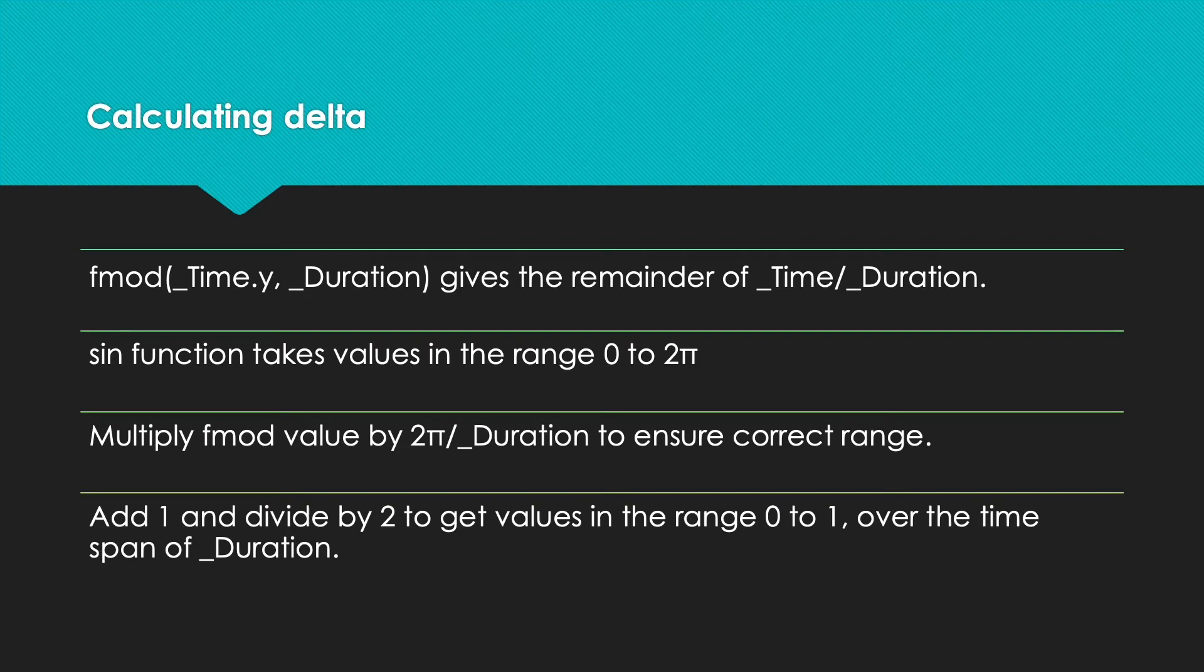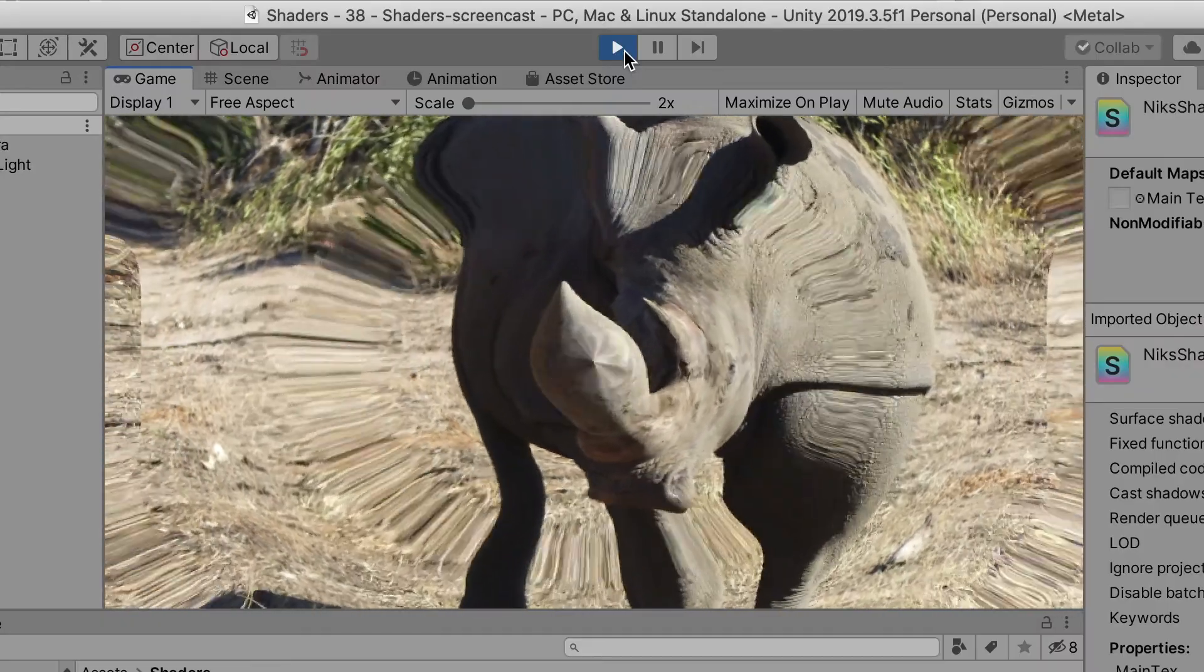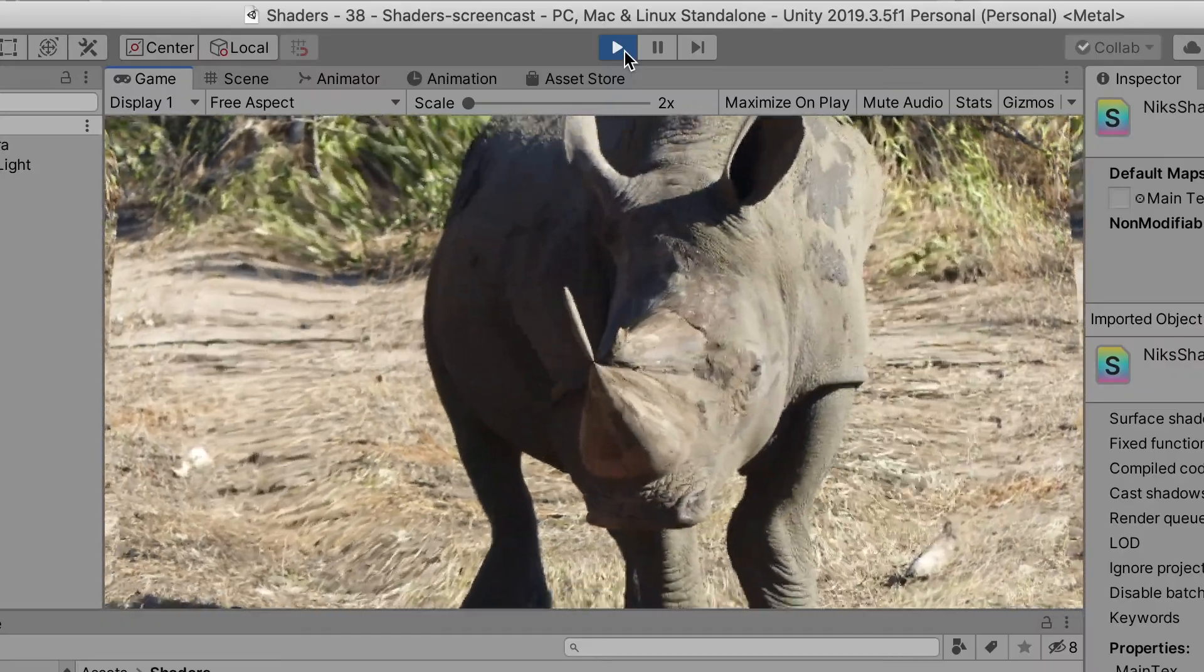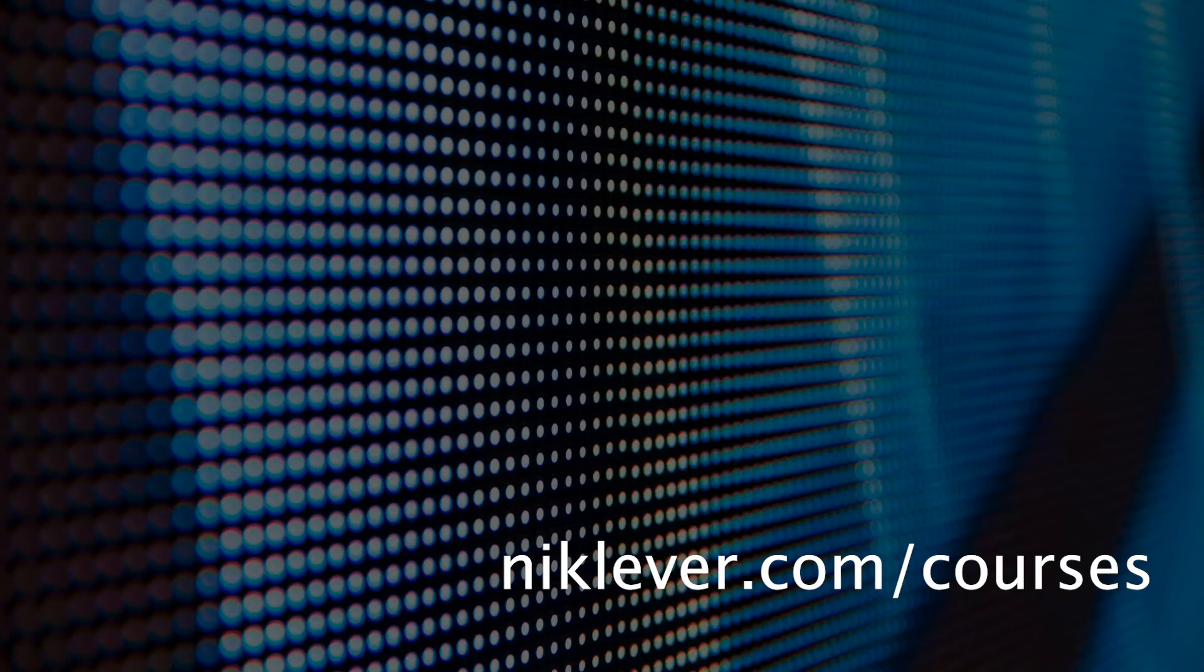Using sine in this way is very common where time is included in a shader. Now we know how to ripple a texture. This video comes from my Unity shader course. Get the full course for a great discount by following this link. See the description for a link to the resources.